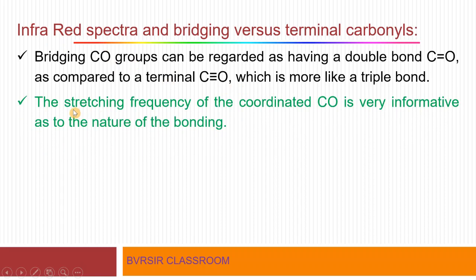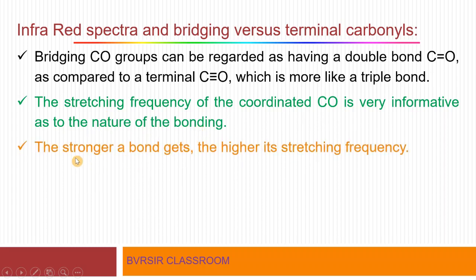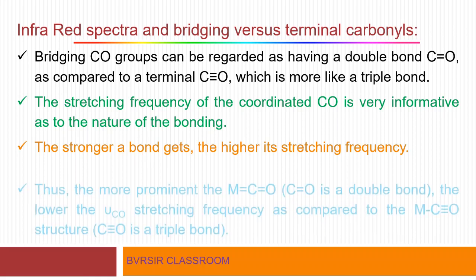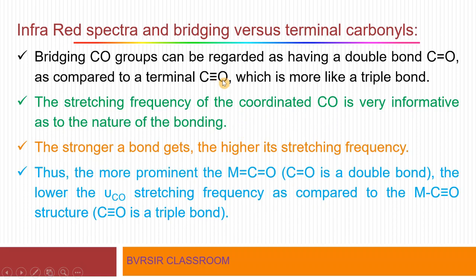The stretching frequency of the coordinated C-O is very informative as to the nature of the bonding. From the C-O stretching frequency observed in the IR spectrum, we can determine the nature of bonding. The stronger a bond, the higher its stretching frequency. Double bond is less strong than triple bond, so the terminal carbon monoxide requires higher energy. Based on this, we can find out whether we have a double-bonded bridging group or a triple-bonded terminal group.